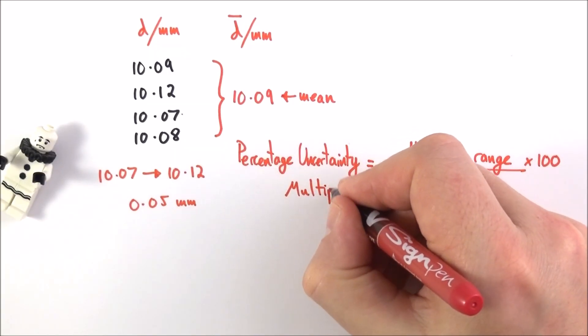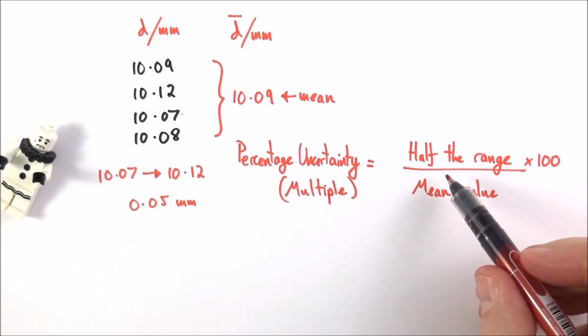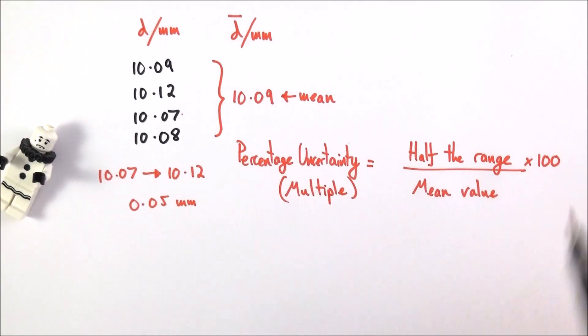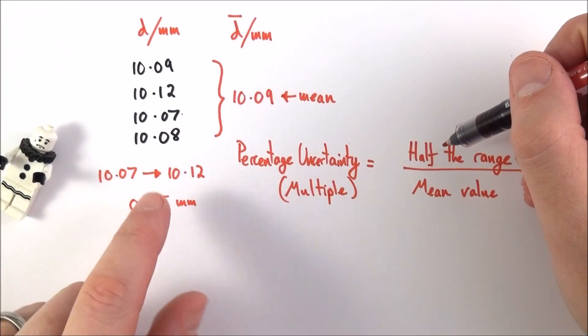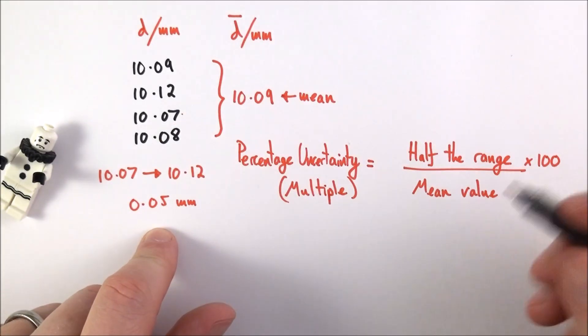The equation is for multiple measurements, so not a single measurement, but when we've had multiple measurements. It's equal to half the range over the mean value, multiplied by 100. Effectively what we're saying is that half the range is the absolute uncertainty in these measurements.